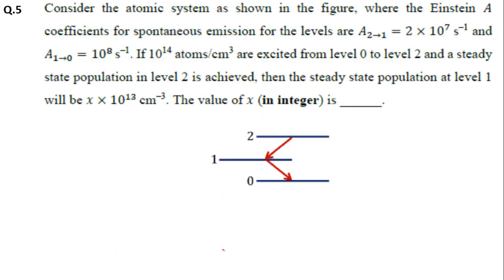Question 5 is a 3-level laser question. Consider the atomic system where the Einstein A coefficients of spontaneous emission are A₂₁ = 2×10⁷ s⁻¹ and A₁₀ = 10⁸ s⁻¹. If 10¹⁴ atoms per cm³ are excited from level 0 to level 2 and steady-state population in level 2 is achieved, find the steady-state population at level 1. The key words are: spontaneous emission and steady-state population.